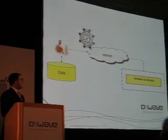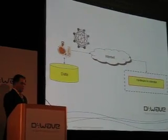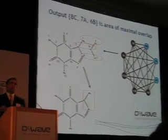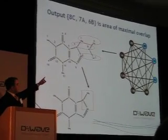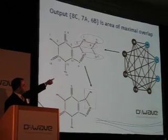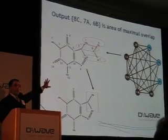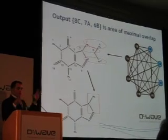What happens is the results of that calculation can be used to show the region of maximum overlap between them. The maximum independent set, the 6B, 7A, 8C, tells you where the two overlap, and it provides you with the biggest area of overlap.